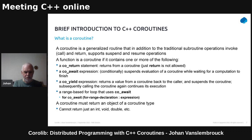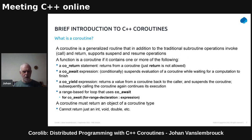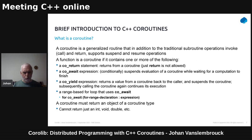A coroutine is a generalized routine that, in addition to the traditional subroutine operations — invoke/call and return — also supports suspend and resume operations. Everybody knows functions: you can call a function, a function will return. Well, coroutines have two things in addition: a suspend and a resume operation. More practically, how do you recognize a coroutine? A coroutine is a function with one of these keywords inside: co_return, co_await, or co_yield.